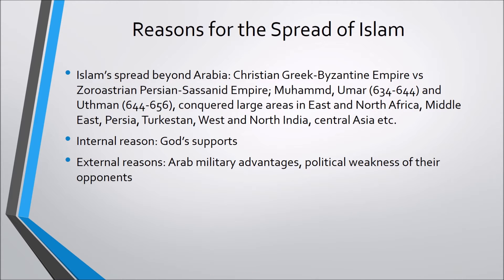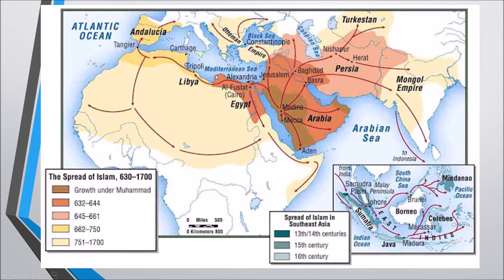The second and third successors of Muhammad — Umar and Uthman — launched a two-pronged attack against the Byzantine and Sassanid empires. One force moved north against the Byzantine provinces of Syria and Palestine. From Syria, the Muslims conquered Egypt, taking the commercial and intellectual hub of Alexandria in 642. Simultaneously, Arab armies swept into the Sassanid Empire, and the Muslim defeat of the Persians at Nihavand in 642 signaled the collapse of that empire.